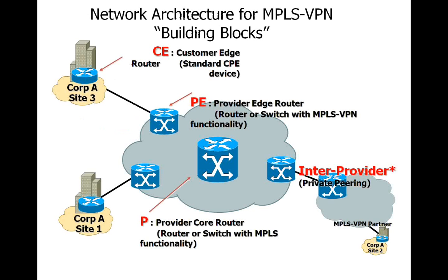We will cover details of how MPLS VPN architecture is implemented in service provider routers. At a high level we should be aware of some building blocks: C represents the customer edge, PE represents the provider edge, P is the provider core router, and it is possible that you are taking service from two different service providers.